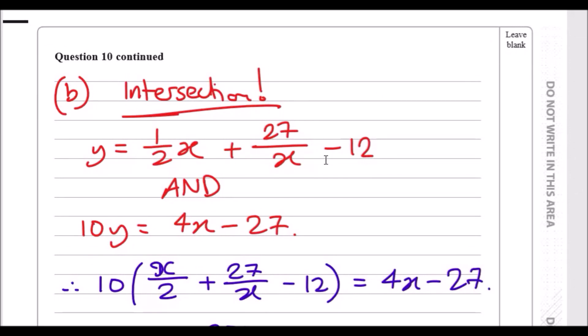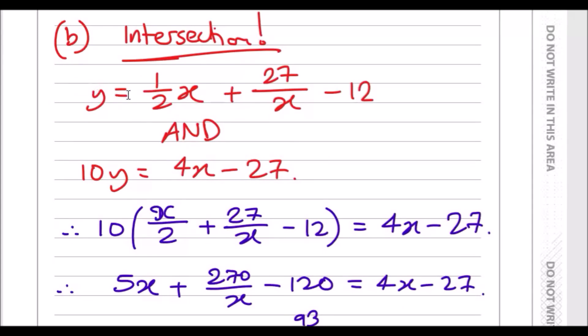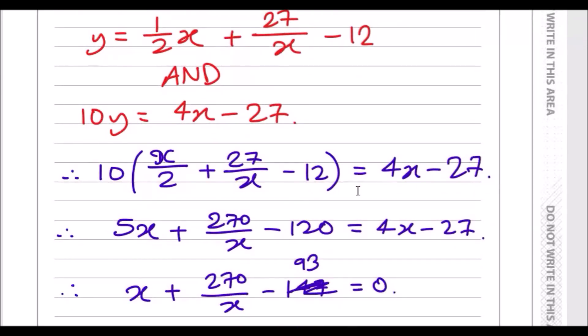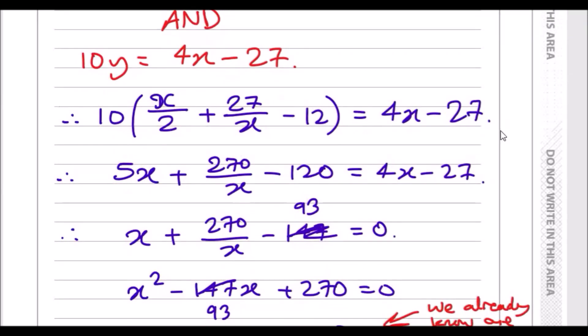We're going to intersect this curve here with this line here. And we need to solve and find the values of x and y both pairs. So what I did, since we know that y, since we've got an expression for y already from the curve, I just substitute all of this into the 10y equation. So we have 10 times the curve equation equals 4x minus 27 from the line.